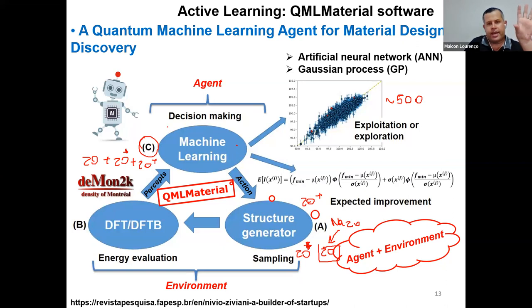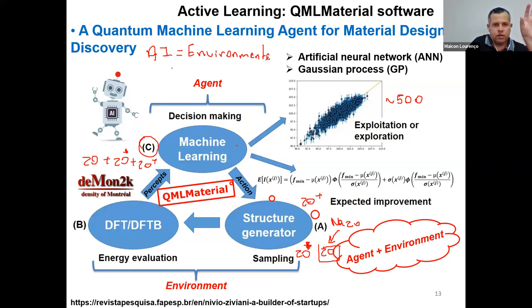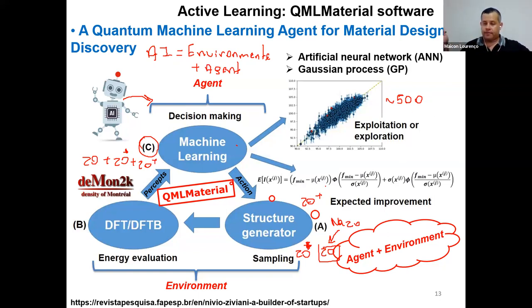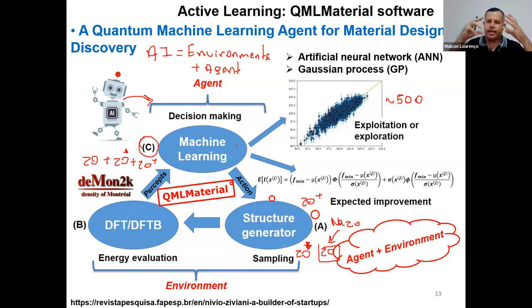One important concept in AI: AI is actually the environment plus the agent. The agent is the decision-making component, where we use data to make decisions in the unexplored or virtual space of 500 structures. The environment is everything else — the DFT or DFTB calculations, the part where structures are generated (Step A). The machine learning regression and the acquisition function for decision-making constitute the agent. So we define the AI based on active learning.